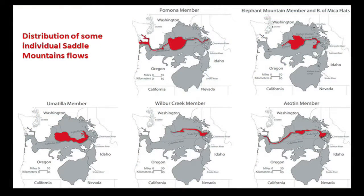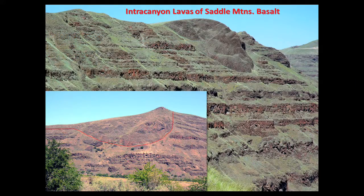The last group of flows, called the Saddle Mountain flows, are kind of interesting, because there are large time gaps between individual Saddle Mountain flows — enough time for erosion to take place, so many of these flows actually flowed down ancient canyons. For instance, the Pomona flow erupted in Idaho, flowed down the ancestral canyon of the Clearwater River, then the ancestral canyon of the Snake River, spread out in a huge lava lake in central Washington, and then spilled over into the ancestral canyon of the Columbia River. It made it all the way to the Pacific Ocean — burrowed under sediments for 100 miles out in the Pacific Ocean. You can see the ancient canyon walls with Pomona flow sitting on top.